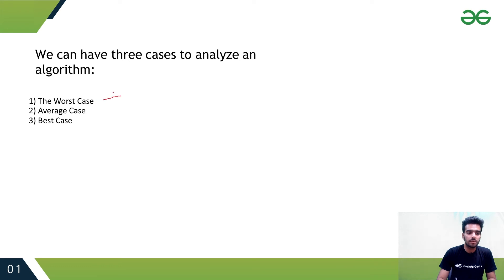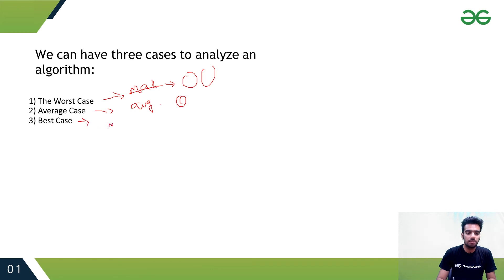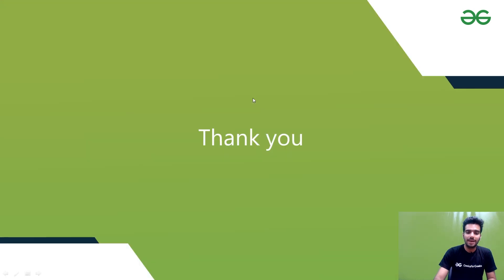Worst case is the maximum time taken by any algorithm, and it is denoted by Big O. Average case is the average time taken by any algorithm, denoted by Theta. Best case is the minimum time taken by any algorithm, denoted by Omega. Using these notations and cases, we can analyze any algorithm. We'll see what these notations are in detail in the next lecture. Thank you.